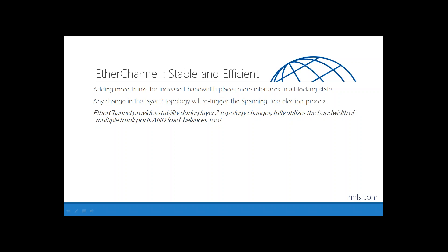As my network grows, I may look to add additional trunks to increase bandwidth between my switches. The problem with spanning tree protocol is: the more trunk ports I have, the more interfaces end up in a blocking state. The more I try to overcome that issue, the more spanning tree shuts those interfaces off.